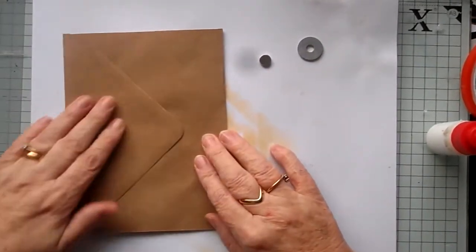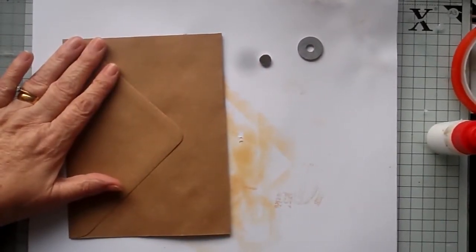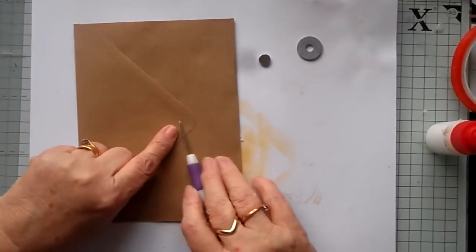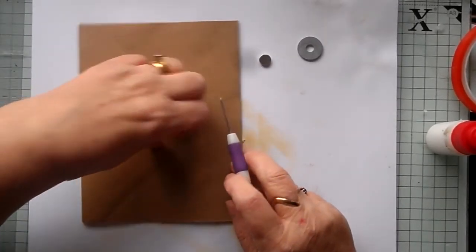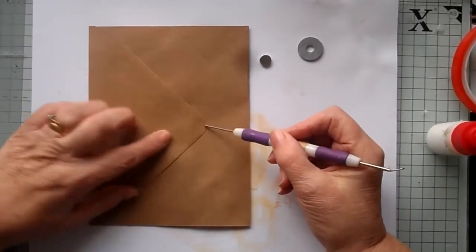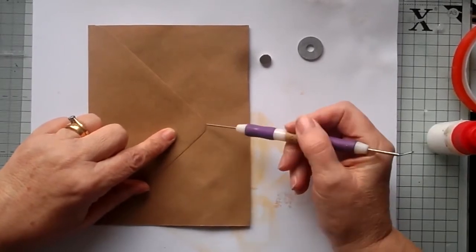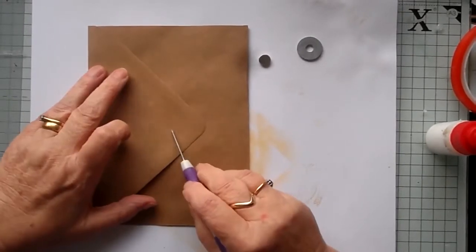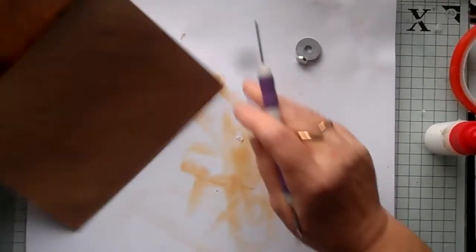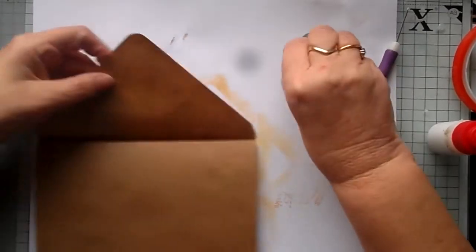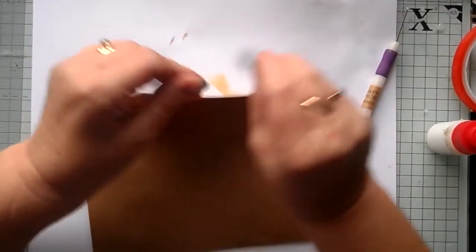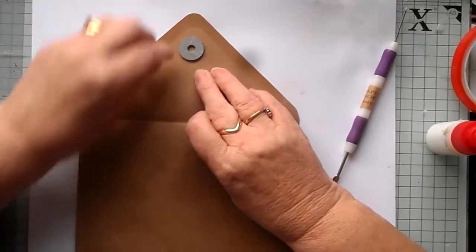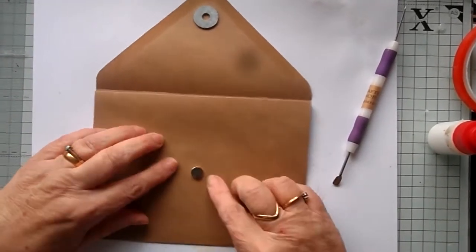So what we're going to do first is just make a little mark so we know where about we want the magnet. Now you don't want it too close to this edge because when you're pulling it across you've got a better chance of tearing it. So we want to come in to about an inch from about there. So I'm just going to put a little tiny mark. You can see that little mark there. And it's come through this side there. And this is where we're going to attach the washer. So the washer is actually going to go there and we're going to put the magnet there.